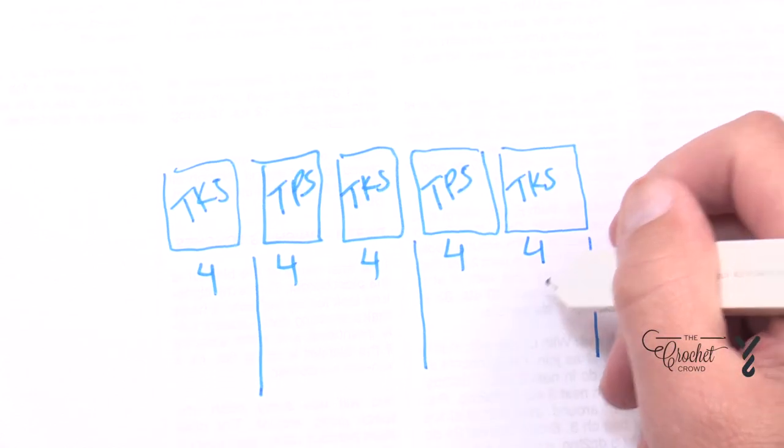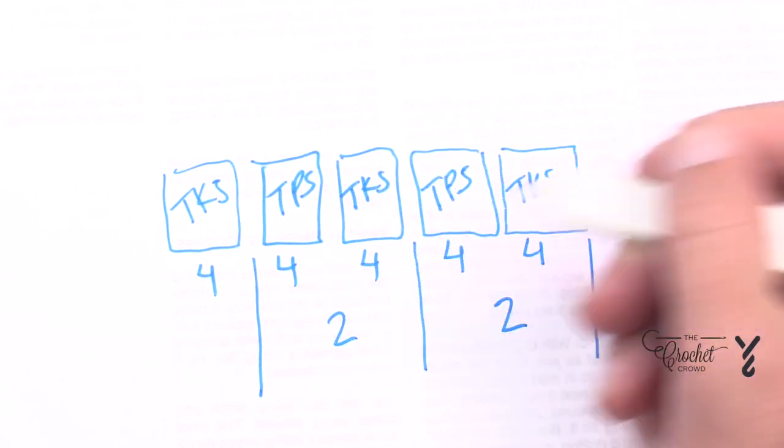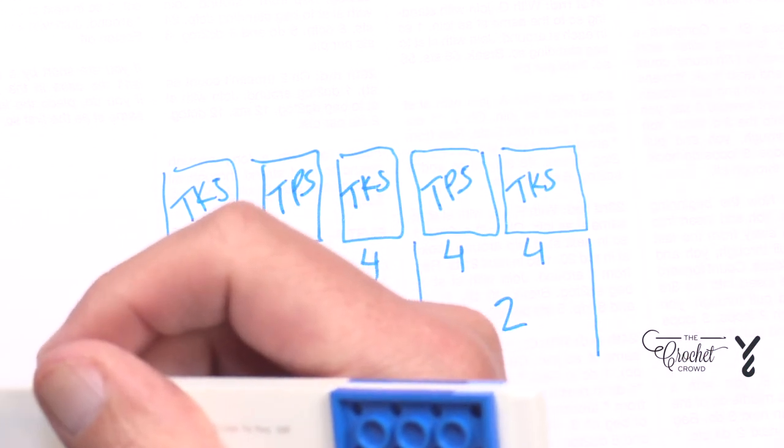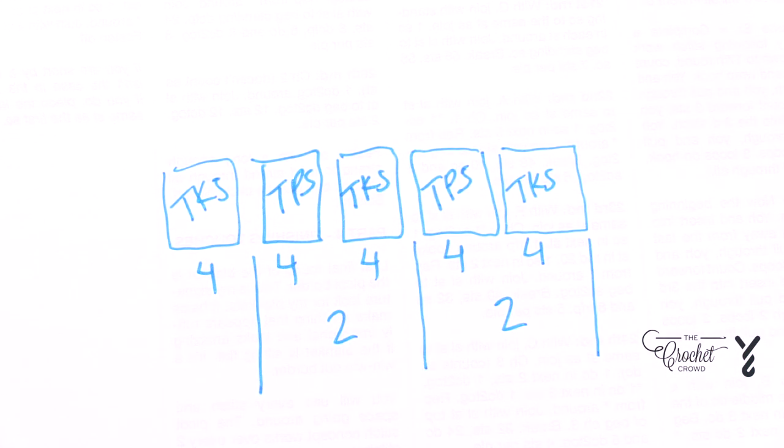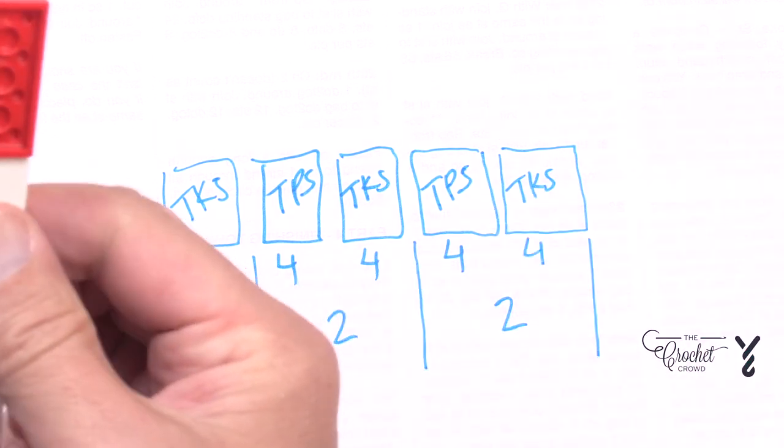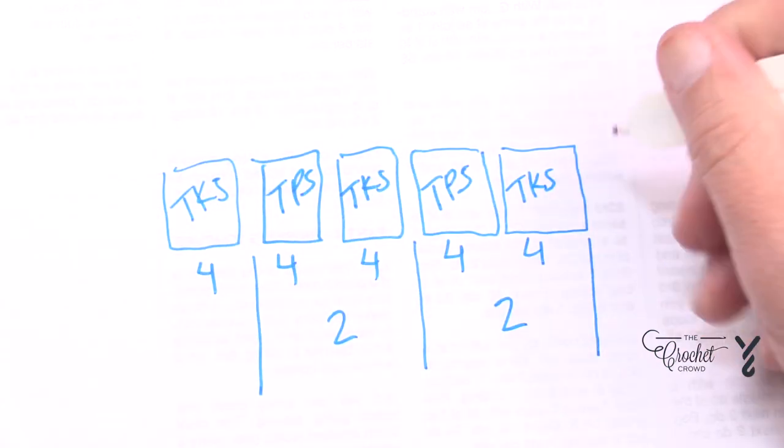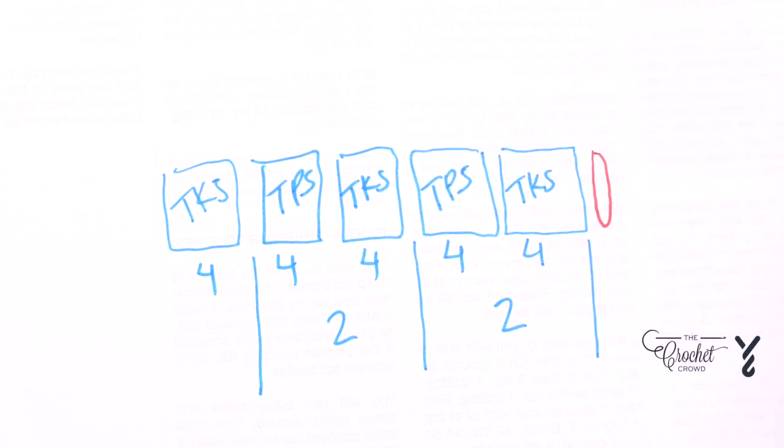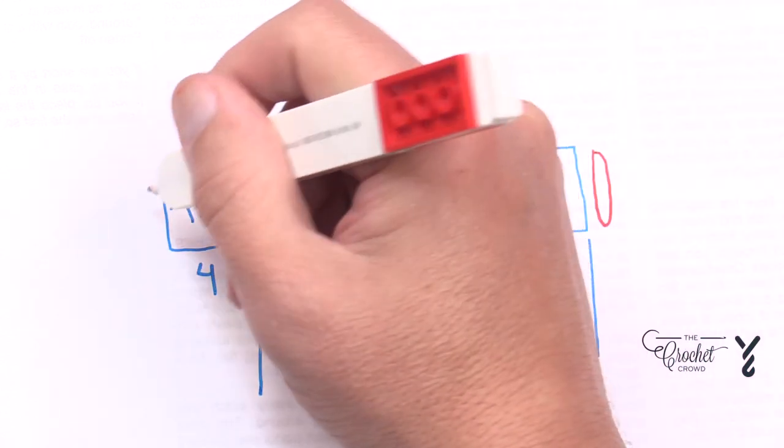Okay so you got your two boxes. So you end up with an odd box that's out. So what's the other thing about Tunisian that we have to factor in? We have to factor in that we have a starting loop on the one side and we also have the finishing loop on the other side.